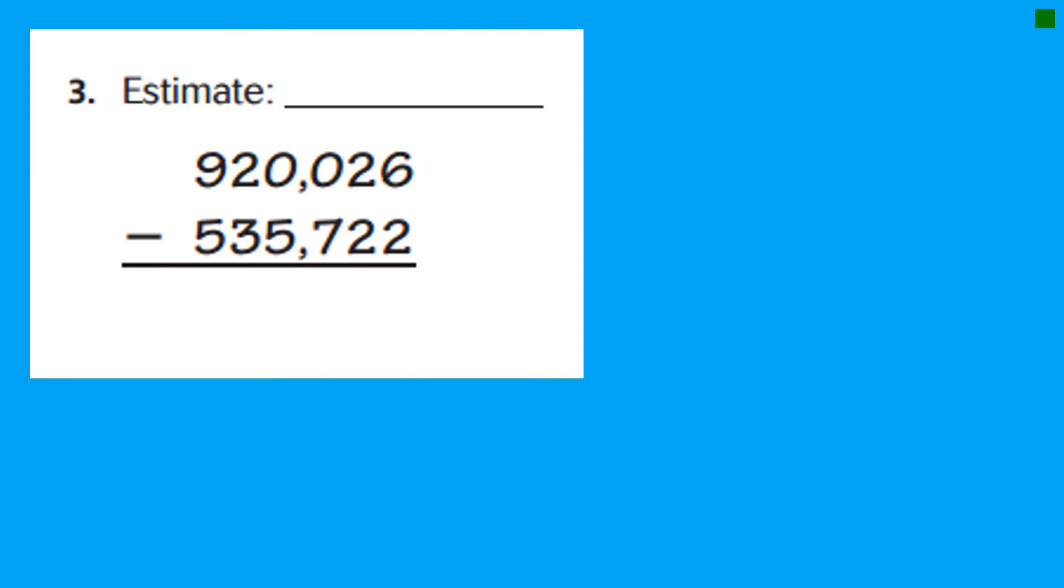Number three. The reason I chose this one to do is because it has a couple of zeros in it. So let's get the estimate first. I'm going to the highest place value because it doesn't tell me not to use that one. Sometimes the directions say round to the thousands. And then you have to round to the thousands. But this one, I'm going highest place value.